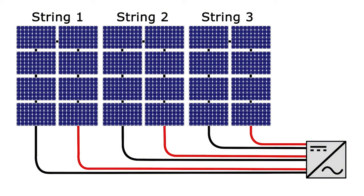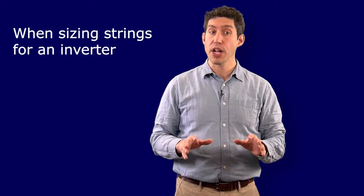Because we're going to have three strings in parallel, however, we need to add the current for each string. In this case, it would be 8.6 amperes, which is the short circuit current for each string multiplied by 3. This gives us an operating short circuit current of 25.8 amps, which exceeds the maximum input. This means that we cannot have three strings of 8, and our only option in this case is two strings of 12 for this inverter and module pair.